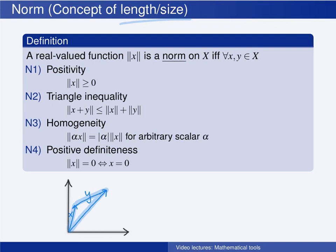Finally, the length function must satisfy the homogeneity condition, meaning that if we multiply an element by any scalar number alpha, then the length of the result is the length of the original element scaled by the absolute value of alpha. Say, for instance, that alpha is 2 and that the element x is multiplied by this. Then the norm of the element 2 times x is 2 times as long as the length of the original element x.